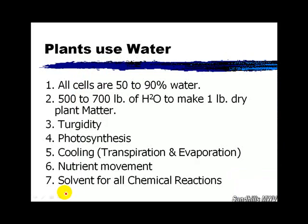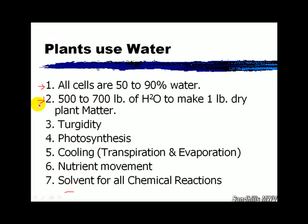Irrigation is important — the plants do need water. All plant cells, and human cells for that matter, are between 50 and 90 percent water. It takes 500 to 700 pounds of water to make one pound of dry plant material. That number is even higher to make a pound of beef. So water is very important to the plant.